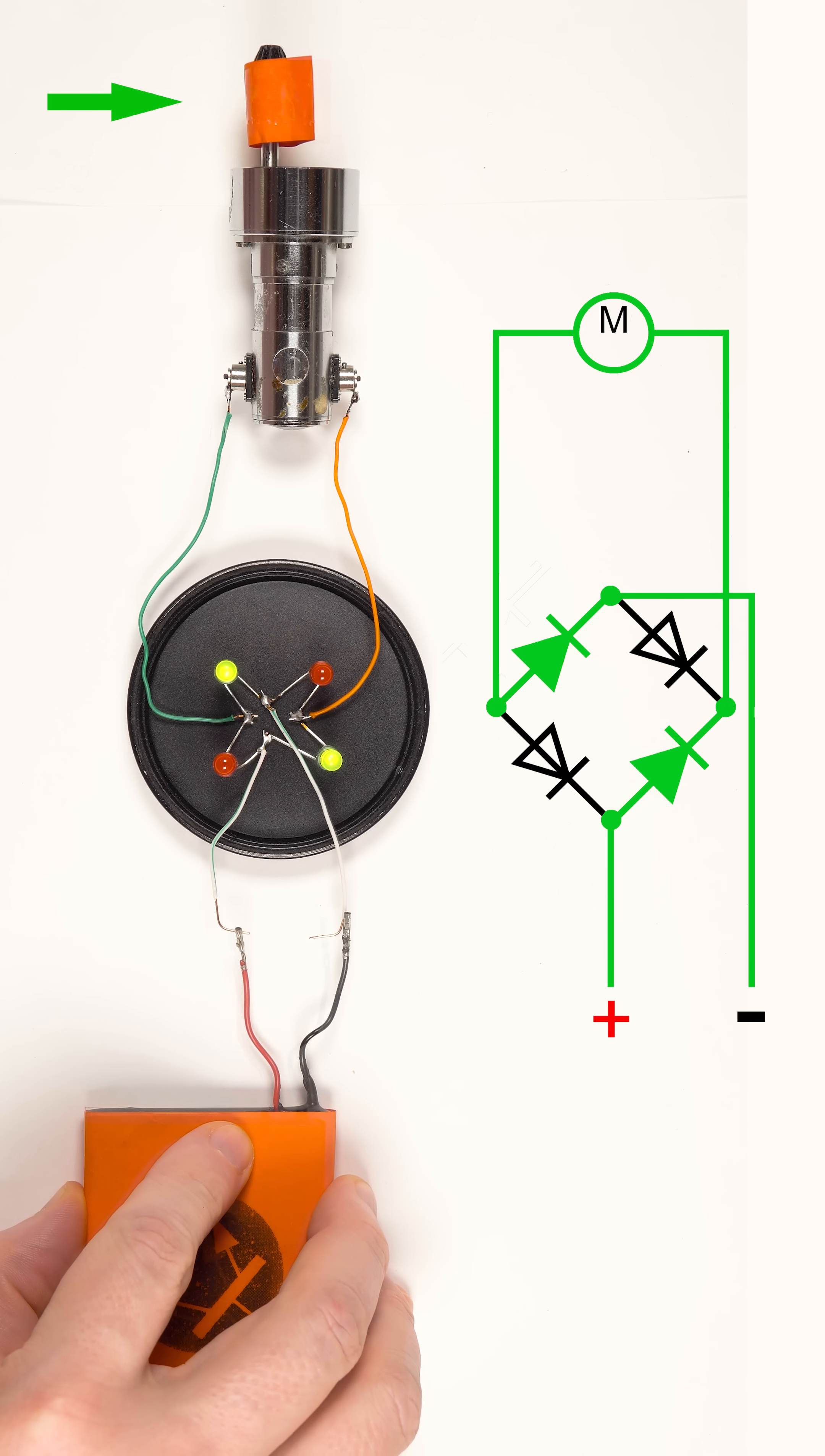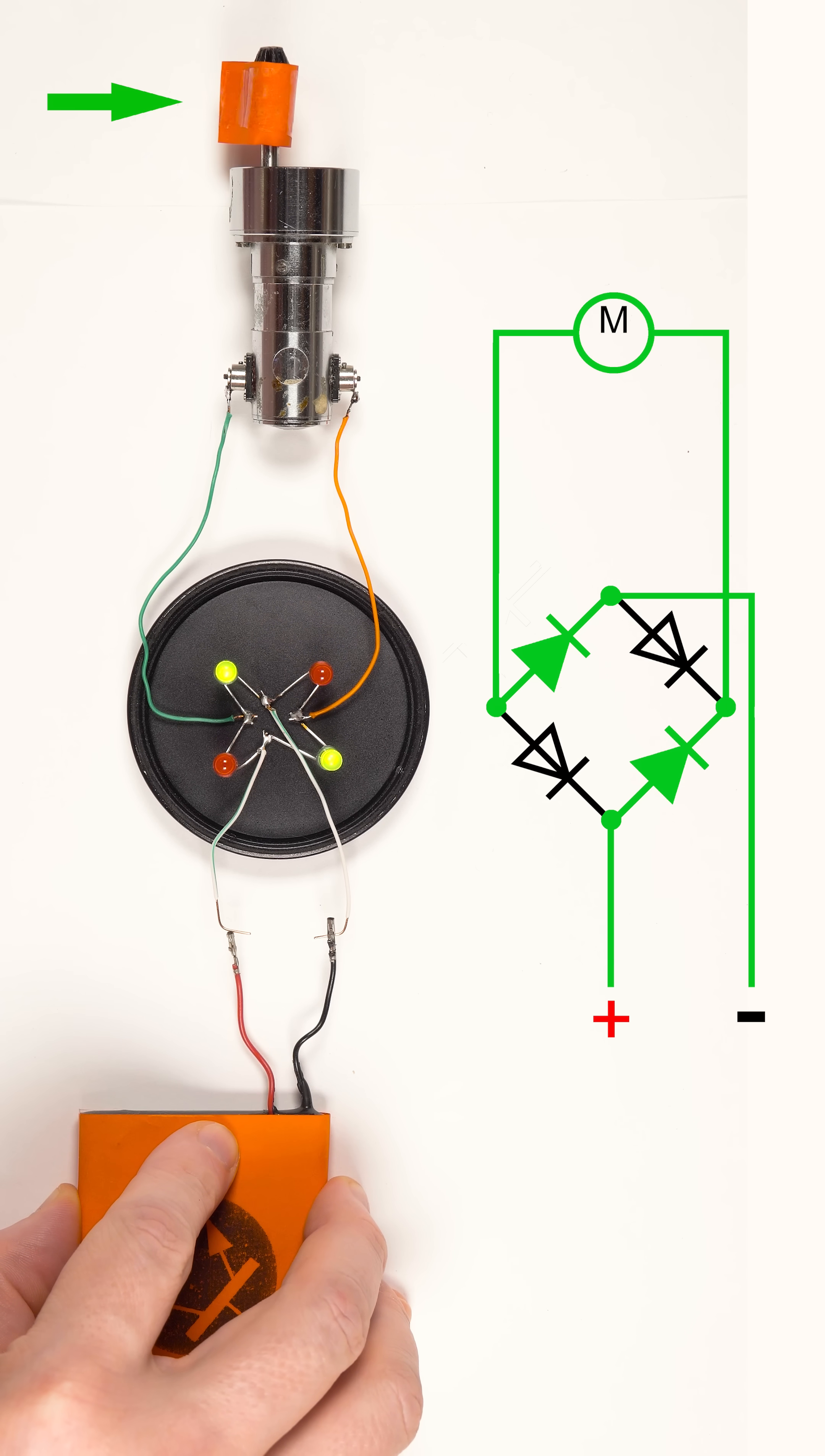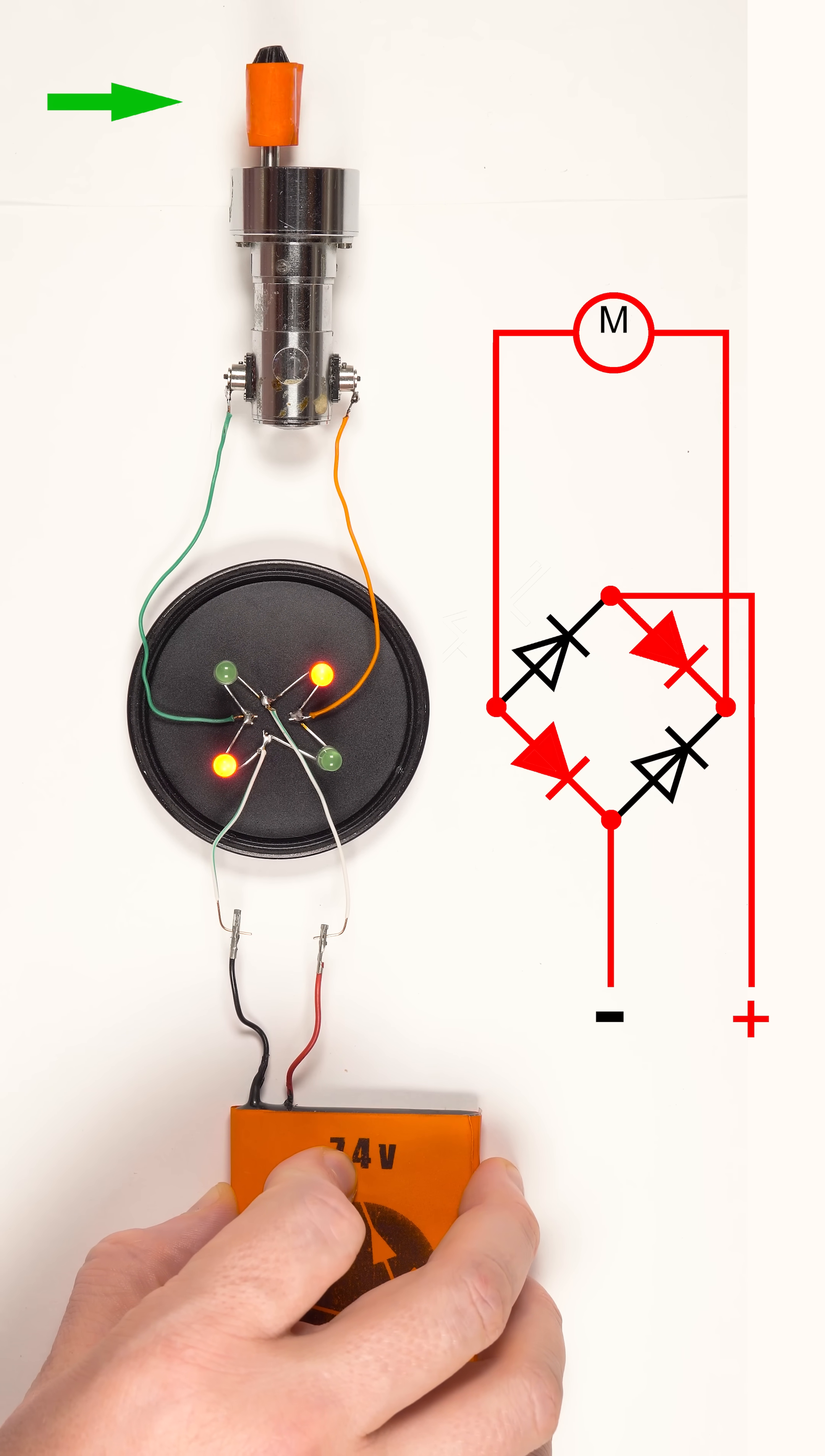As we remember, diode's arrow indicates current flow direction, so in this polarity it passes through green LEDs. And now it goes through red LEDs.